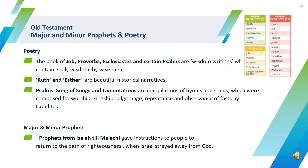The next in the Old Testament are books classified as poetry, like the Book of Job, Proverbs, Ecclesiastes, and certain Psalms. These are wisdom writings containing godly wisdom by wise men. Psalms, Song of Songs, and Lamentations are compilations of hymns and songs composed for worship, kingship, pilgrimage, repentance, and observance of fasts by Israelites. It also contains the books of Ruth and Esther, which are beautiful historical narratives.